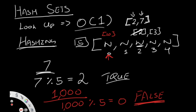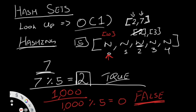For the remove function, the first step is the same as lookup — we find the hash value and locate the element. Once we find it, we remove all instances of it. So for 7: run through the function, go to index 2, go inside the bucket, and remove 7 until it no longer exists. That's how the remove function works.